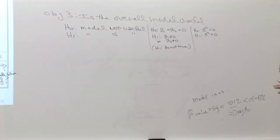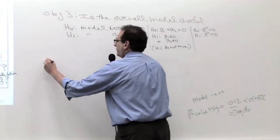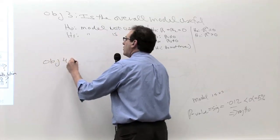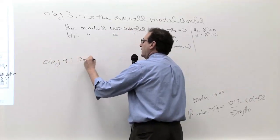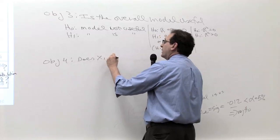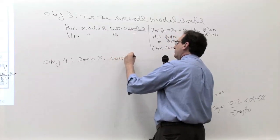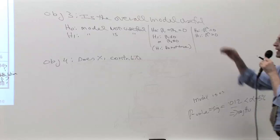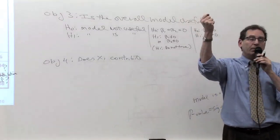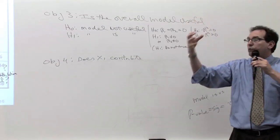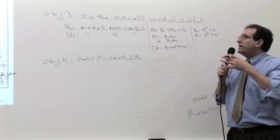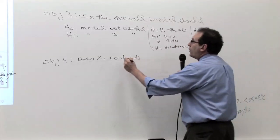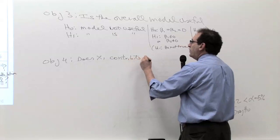Okay, the last objective of the chapter, objective four. As I said before, does X1 contribute to the model? In other words, we now know that the model is useful, meaning that X1 and X2, taken as a group, sort of all pulling together, makes a nice contribution. Does X1 by itself contribute to the model?